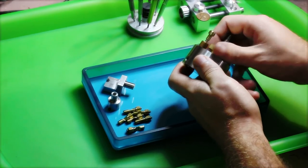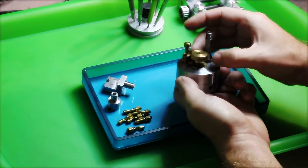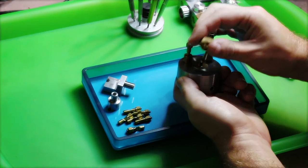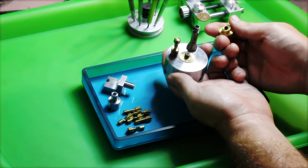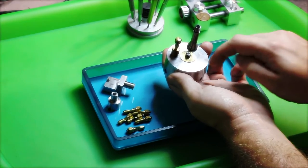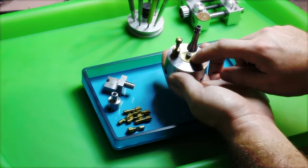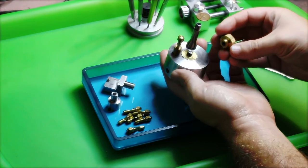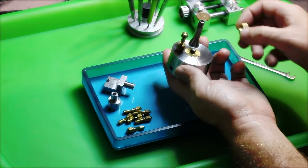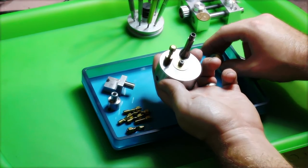If we separate the two halves, this knurled nut here controls the preload, I guess you'd call it, on the tapered bearing that's here. So if you snug this up, the turret really won't move.